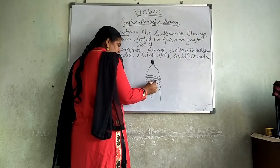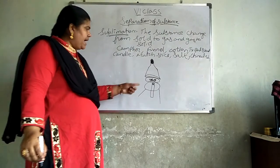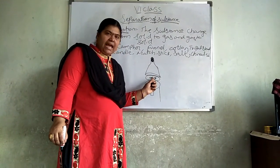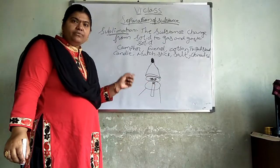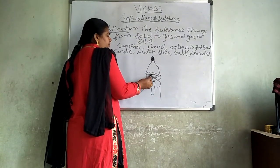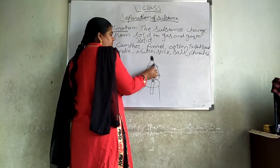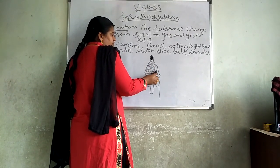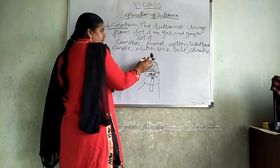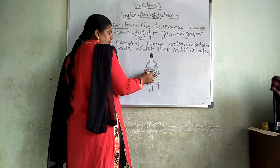Now put a candle and light it. When the heat touches the camphor, which is in solid form, it will change into vapor form and rise up to touch the funnel. Again, when it cools, it comes back to its solid form in the chain dish.